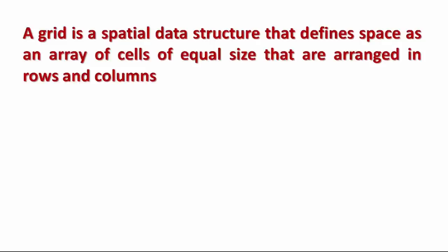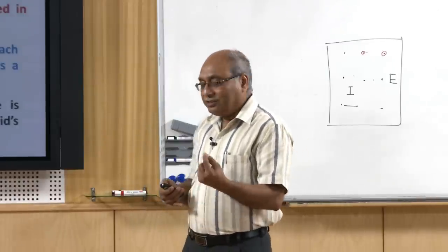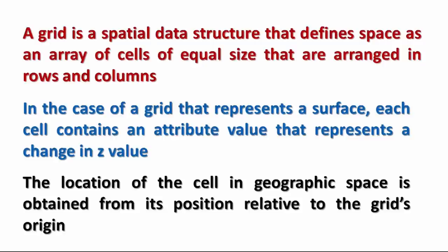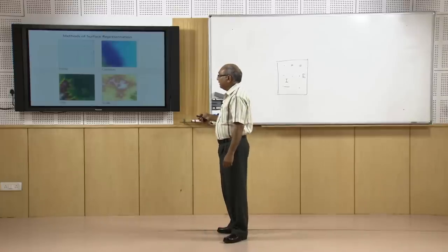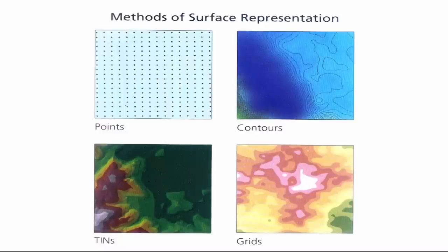Digital elevation models are generally in the form of a grid, and each cell will represent a value. In a discrete form you have point data; you can also represent it as contours or in TIN form. The same point data can also be used through interpolation to create surface raster grids.